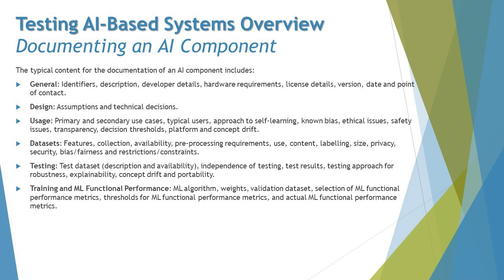For training and ML functional performance, there are several metrics to document — many of which were covered in previous chapters. These include the ML algorithm, the weights, the validation data set, selection of ML functional performance metrics, thresholds for all ML functional performance metrics, and the actual ML functional performance metrics achieved.